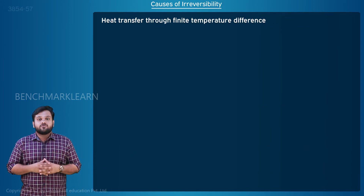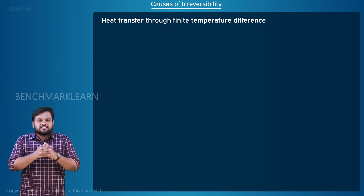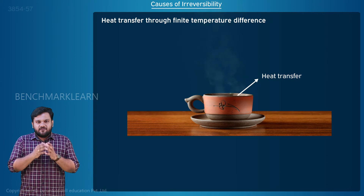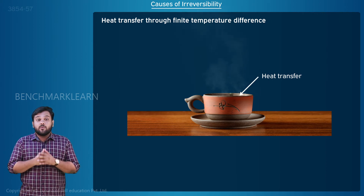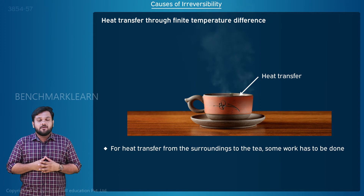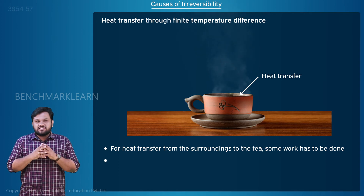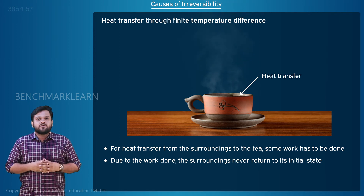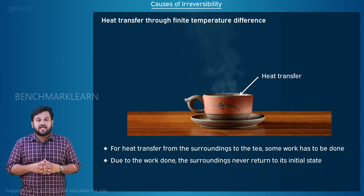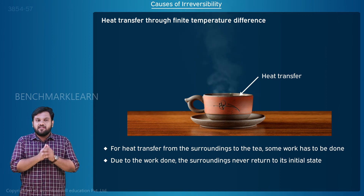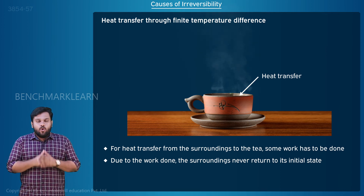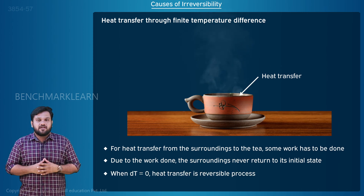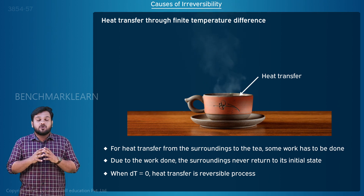Heat transfer through a finite temperature difference. Consider the example of hot tea losing heat to the surrounding. The reverse direction heat transfer requires some work to be done on the system by the surrounding, so the surroundings will not return to their initial state. A heat transfer process becomes less and less irreversible as the temperature difference between the two bodies approaches zero. When dT equals zero, the heat transfer is completely reversible, but such a process does not occur in nature.